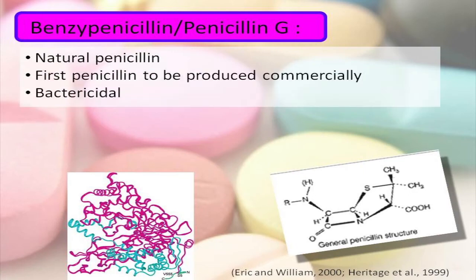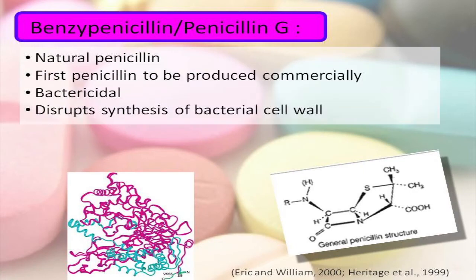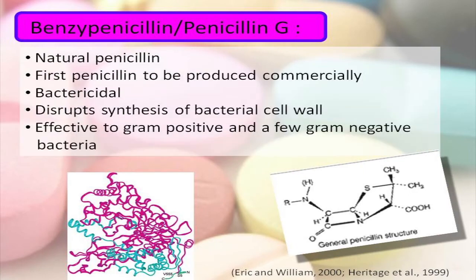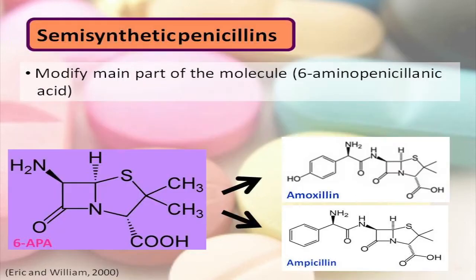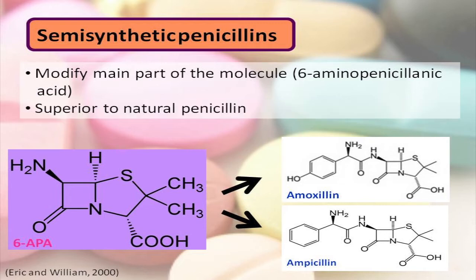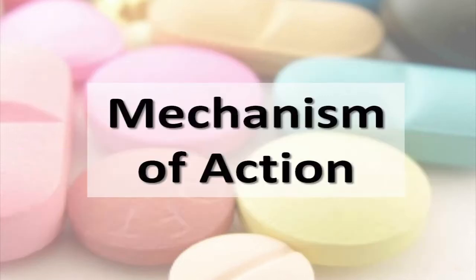Penicillin G is a natural penicillin. It is the precursor to all other penicillin including semi-synthetic penicillin. Semi-synthetic penicillin have a modified 6-APA site which causes it to be more superior than natural penicillin.